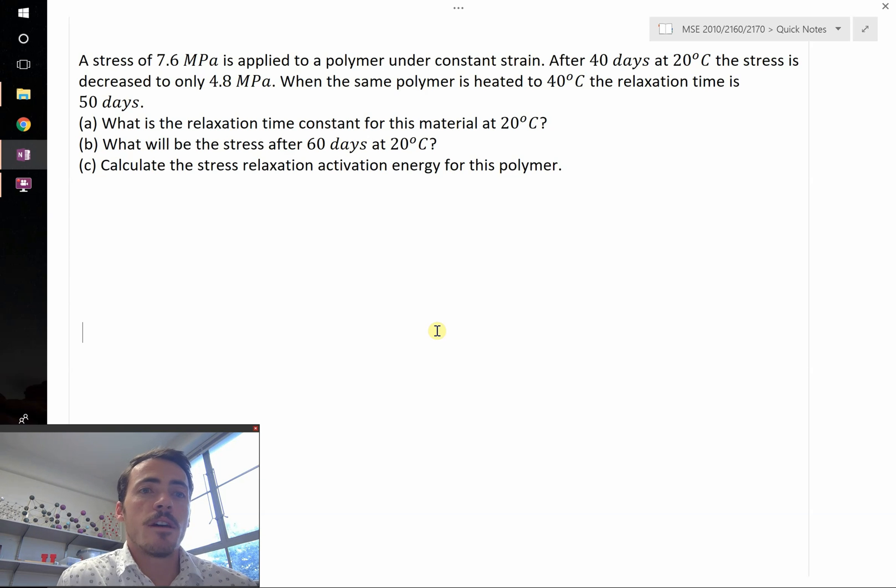So the question says a stress of 7.6 megapascals is applied to a polymer under constant strain. After 40 days at 20 degrees Celsius, the stress is decreased to only 4.8 megapascals. Furthermore, when the same polymer is heated to 40 degrees Celsius, the relaxation time is 50 days. Part A asks what is the relaxation time constant for this material at 20 degrees Celsius. Then it asks what will be the stress after 60 days at 20 degrees Celsius. And finally, calculate the stress relaxation activation energy for this polymer.